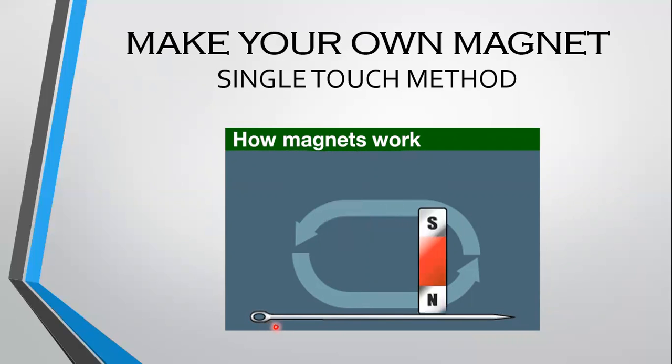What happens? This iron pin is magnetized and is ready to attract other objects made of iron. But great care must be taken that the pole of the magnet and the direction of its movement should not change.